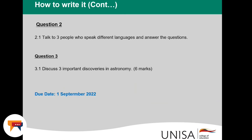Section B also consists of question two and question three. For question two, you are requested to talk to three different people who speak different languages and answer the questions as asked in your tutorial letter 101. Please investigate — you are a science teacher and you need to investigate. If you take answers from the internet or the study guide, I will find out. Investigate and write all the answers you obtained.